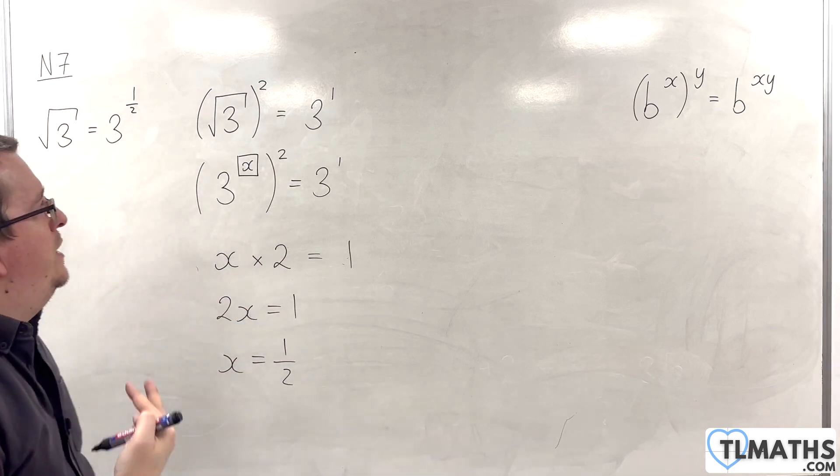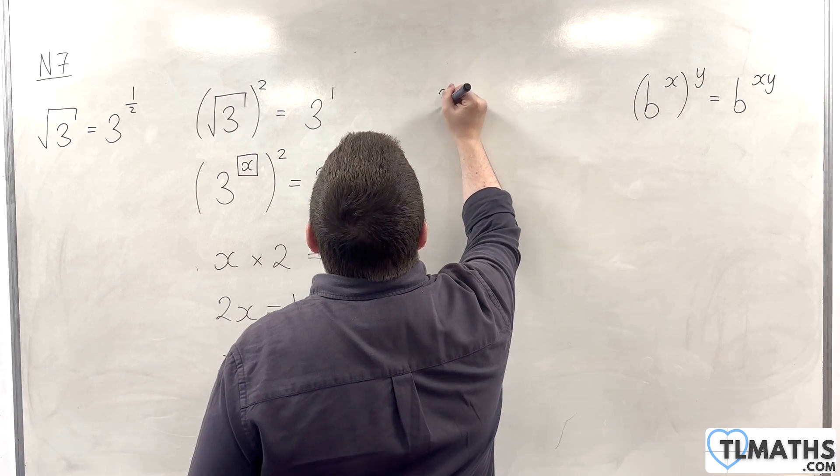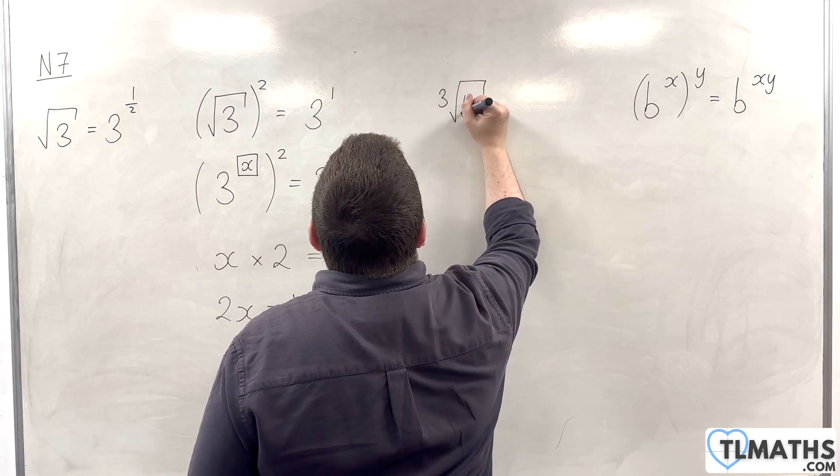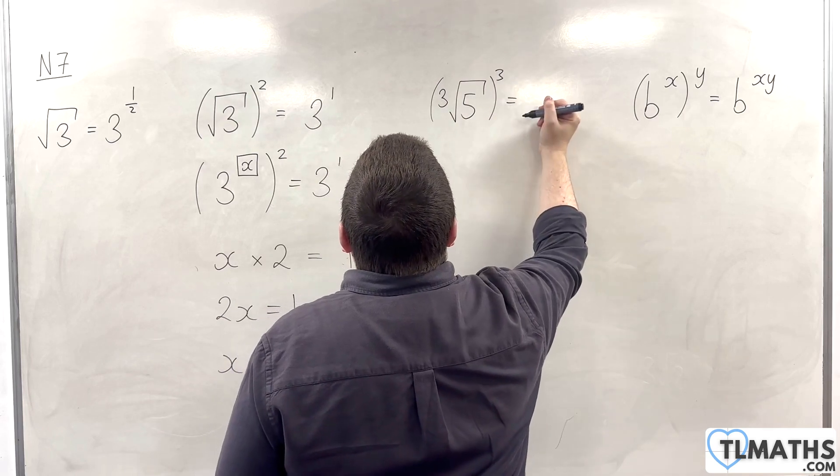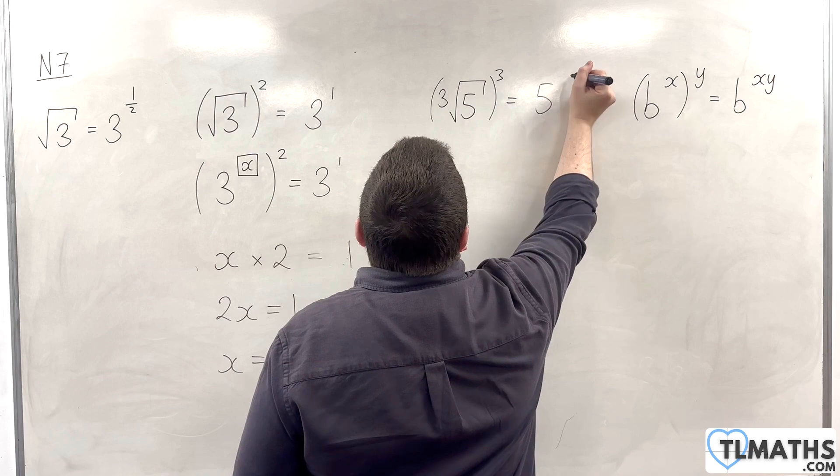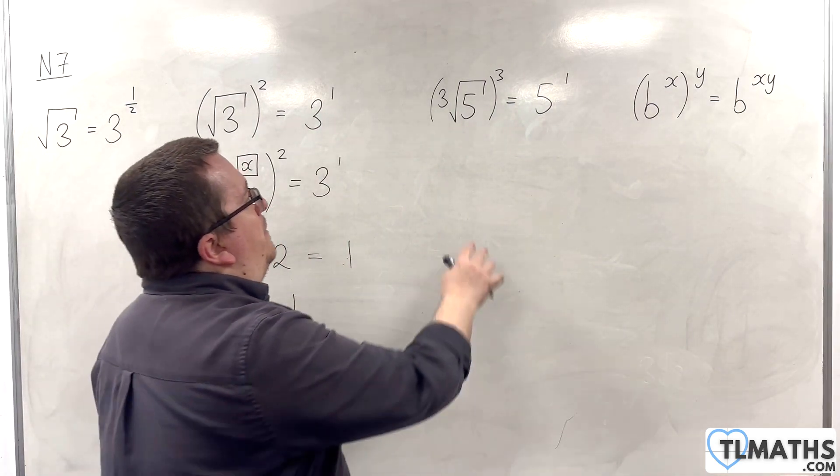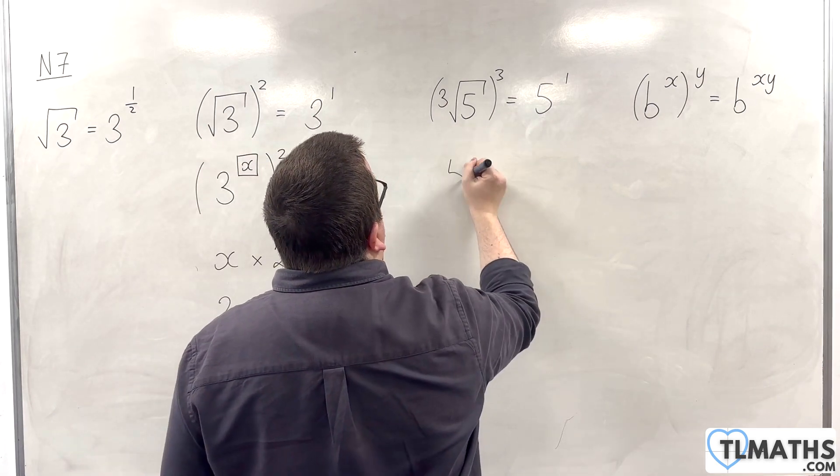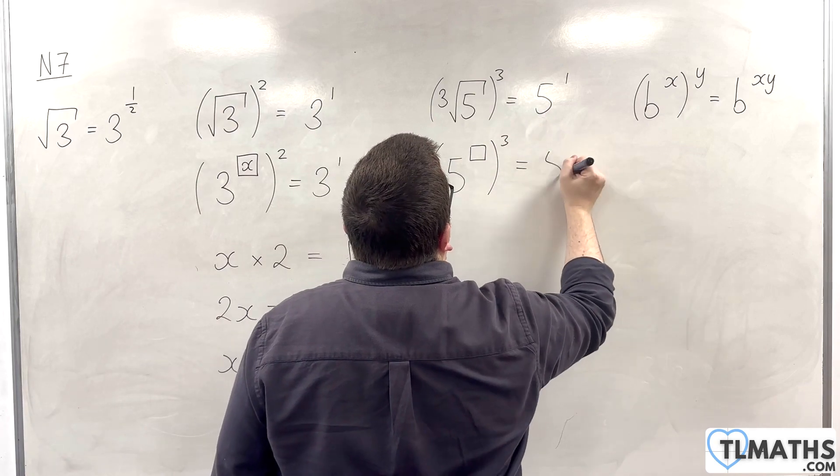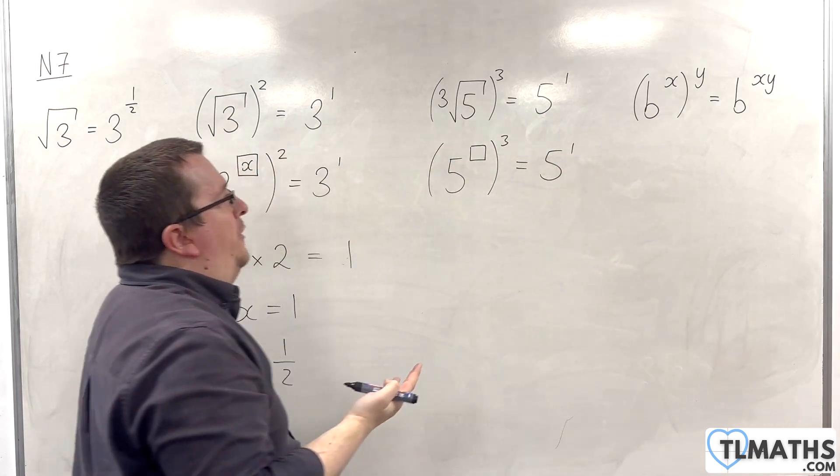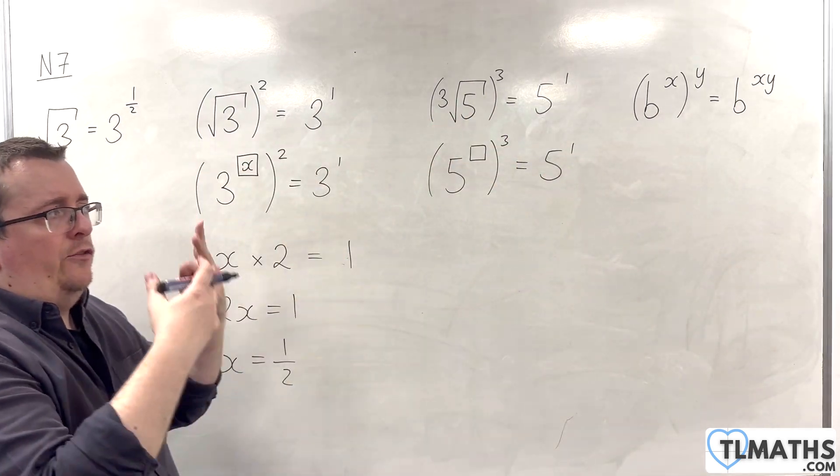Now, let's continue that train of logic. What about if I had the cube root of 5 and I cube that? Now, we've seen that that has to be equal to 5, which is the same as 5 to the power of 1. So, if I was to be able to write the cube root of 5 as 5 to the power of something, then I need this expression to work using our rule of indices. When we have the brackets, we multiply them together.